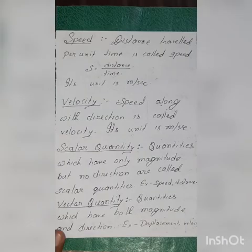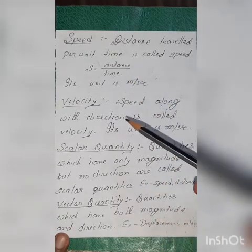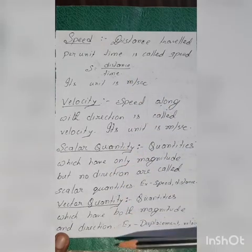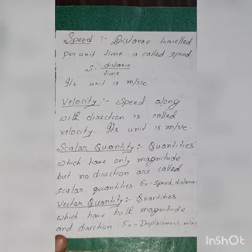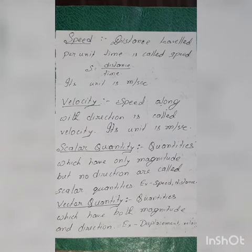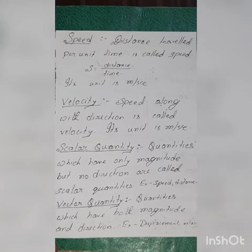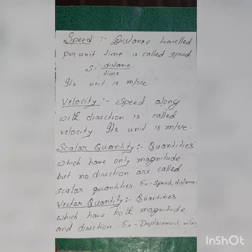Today, I have explained the topics: speed, velocity, scalar quantity, vector quantity, acceleration, and graphical representation of motion. Hope the explanation helps you in understanding the chapter properly. Next week, I will meet you again with the explanation of the remaining parts of the chapter. Until then, take care.